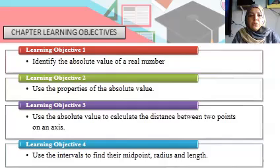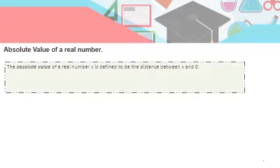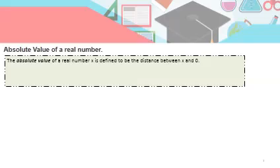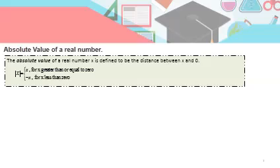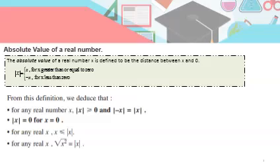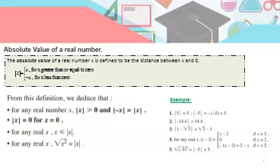First, we learned what the absolute value means. The absolute value is the distance between zero and the value x. As you know, distance cannot be a negative number, so the absolute value is always a positive number. The value itself could be on the positive or negative side, but its absolute value should be positive. We also said that absolute of minus x equals absolute of x, and if the absolute value equals zero then x equals zero. For example, the absolute value of 5 is 5, and the absolute value of minus 5 is also 5.